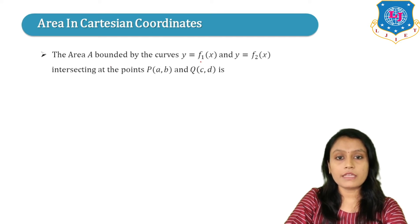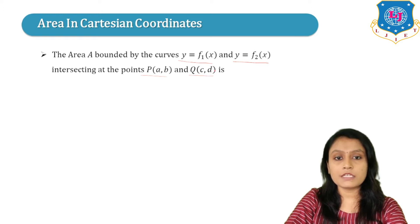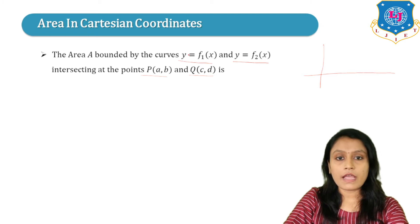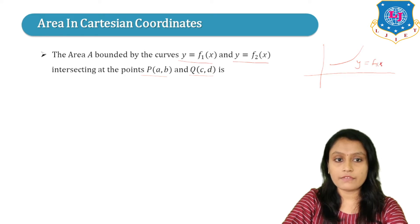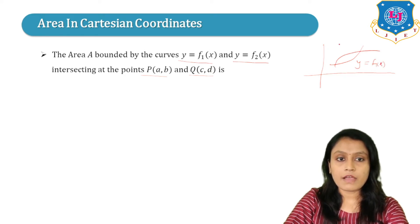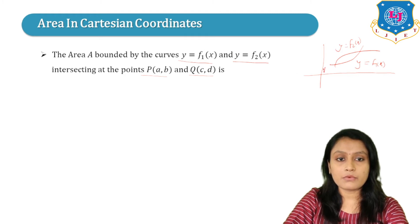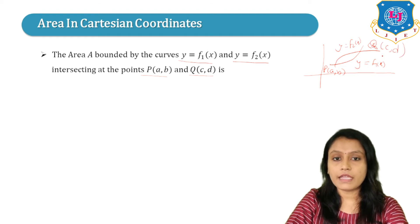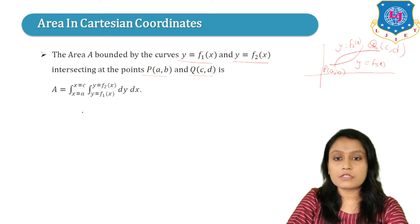The area A bounded by the curve Y = F1(X) and Y = F2(X), intersecting at the points P(A,B) and Q(C,D). We draw two curves Y = F1(X) and Y = F2(X). The area is given by A = double integration, limits A to C for X and F1(X) to F2(X) for Y, of dY dX.